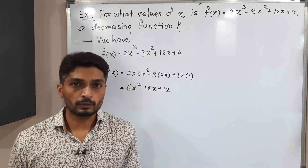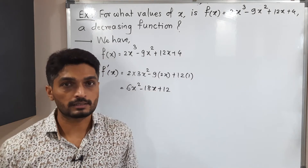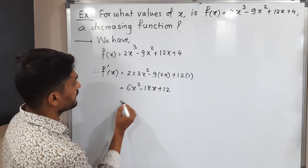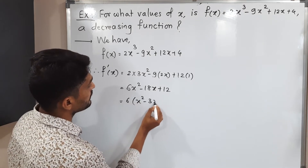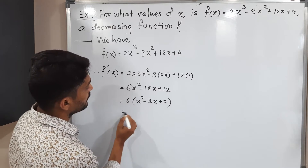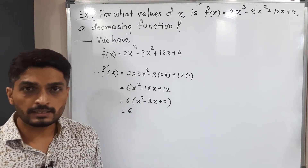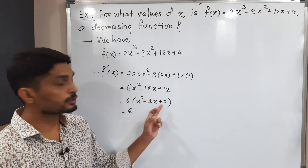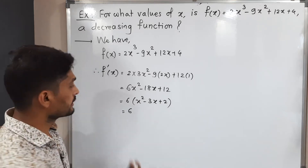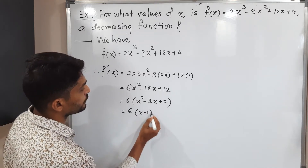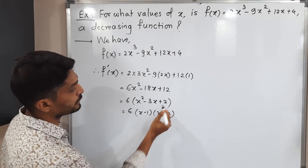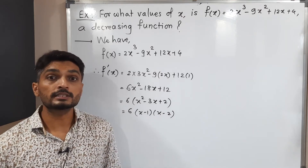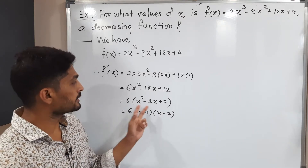After finding the derivative, we find its factors. Can we take 6 common? Yes, definitely. Taking 6 common gives us x² minus 3x plus 2. To factor this, the product is 2 and the sum is minus 3, so it factors as (x minus 1)(x minus 2). The product is (−1)(−2) = 2 and the sum is −1 + (−2) = −3. So these are the required factors.